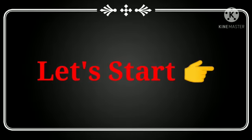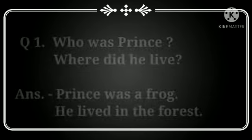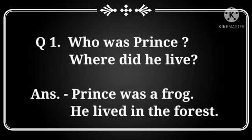Let's start. Question number 1: Who was Prince? Where did he live? Prince koon tha aur vahe kaahan rahata tha? Answer: Prince was a frog. He lived in the forest.